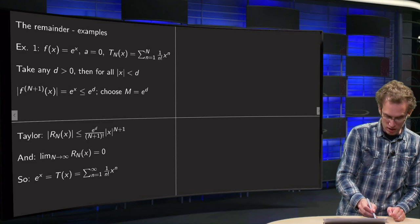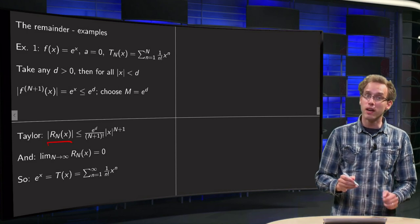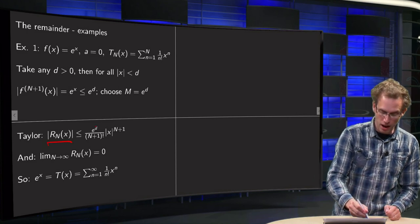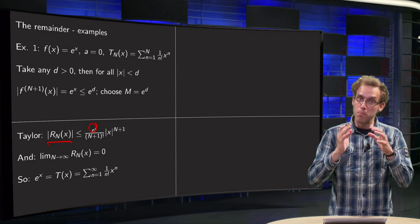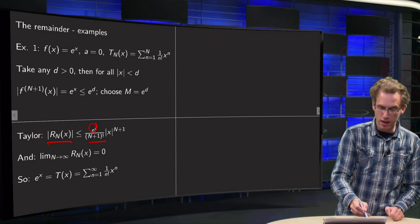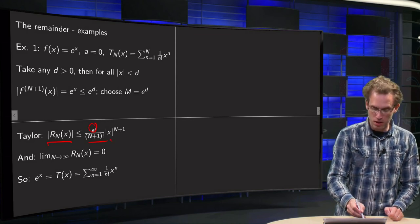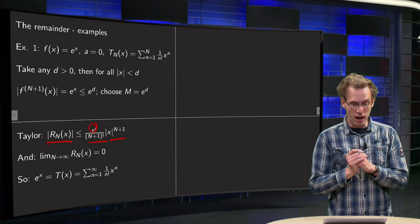Then it says that our remainder is smaller or equal than M, which we chose as e to the power d, the bound on the derivative, divided by capital N plus 1 factorial times absolute value of x to the power N plus 1.